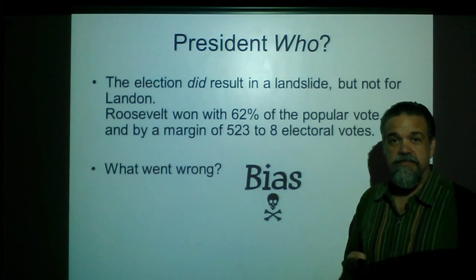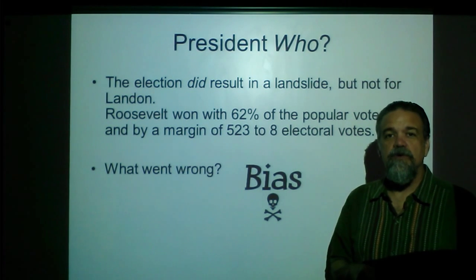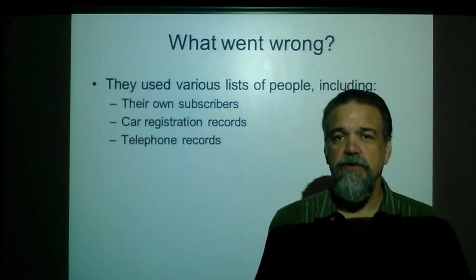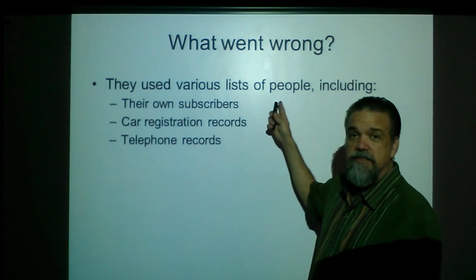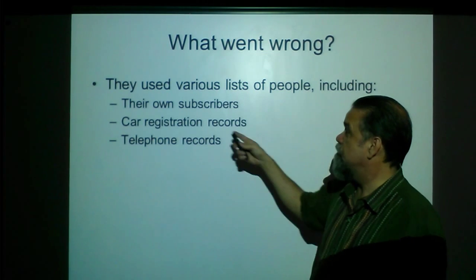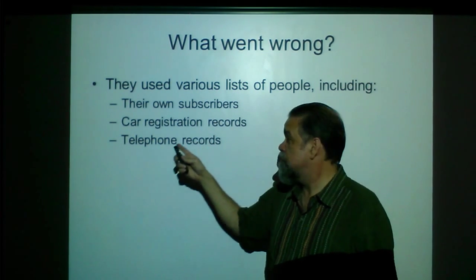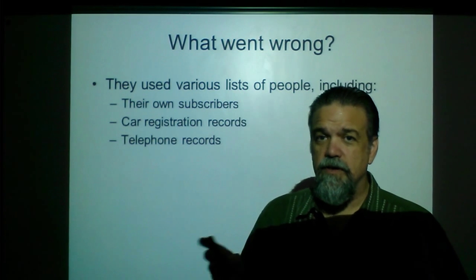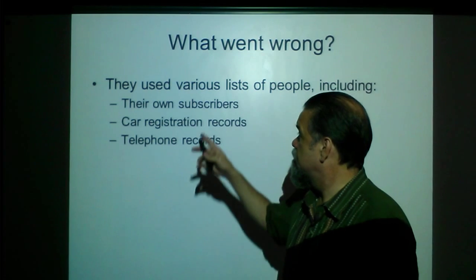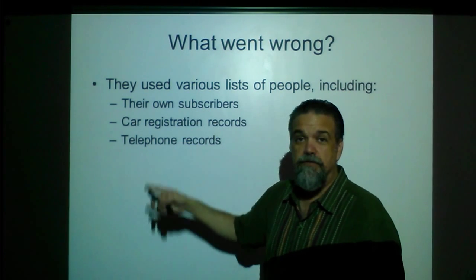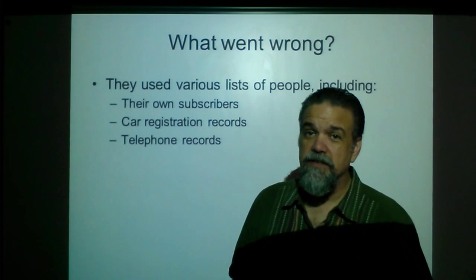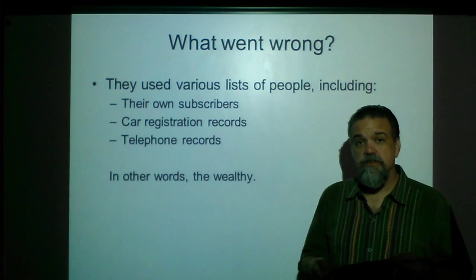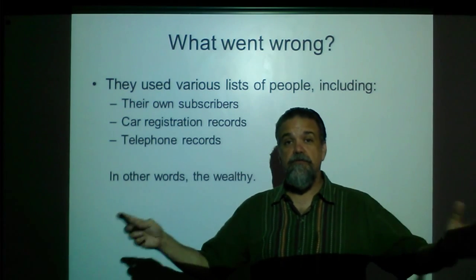Bias. Bias is your enemy when it comes to surveying and collecting data. You want to get as unbiased data as possible. They used lists of addresses including their own subscribers, car registration records, and telephone records. This is 1936 — the Depression. People are poor. Most people didn't have magazine subscriptions, cars, or telephones. Only the rich people did. So basically, the Literary Digest surveyed wealthy people and got a good prediction of how wealthy people would vote, but not how everybody would vote.